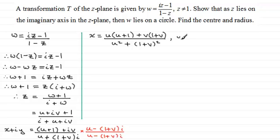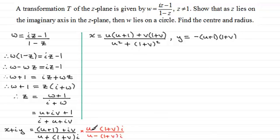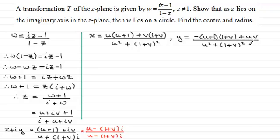Similarly for the imaginary part: looking at the imaginary terms in the numerator expansion, we get u plus 1 times minus(1+v), giving minus(u+1)(1+v). This is also divided by u squared plus (1+v) all squared.